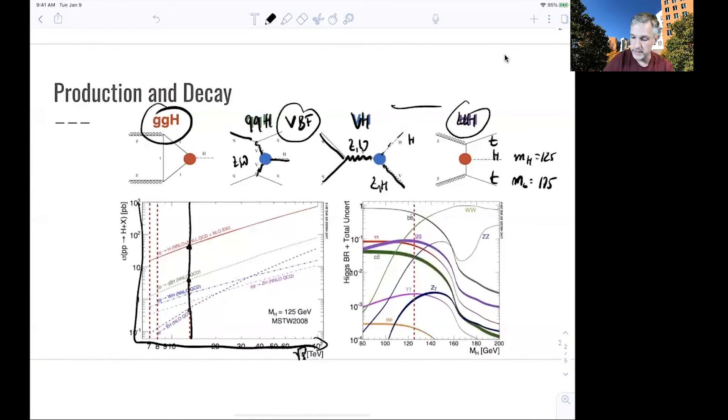Because the mass scale is much higher, the cross-section for ttH is lower. If you were to increase the center of mass energy of the LHC, you see this rapid increase in cross-section because there's more phase space available for this production. The coupling here and here is the same.